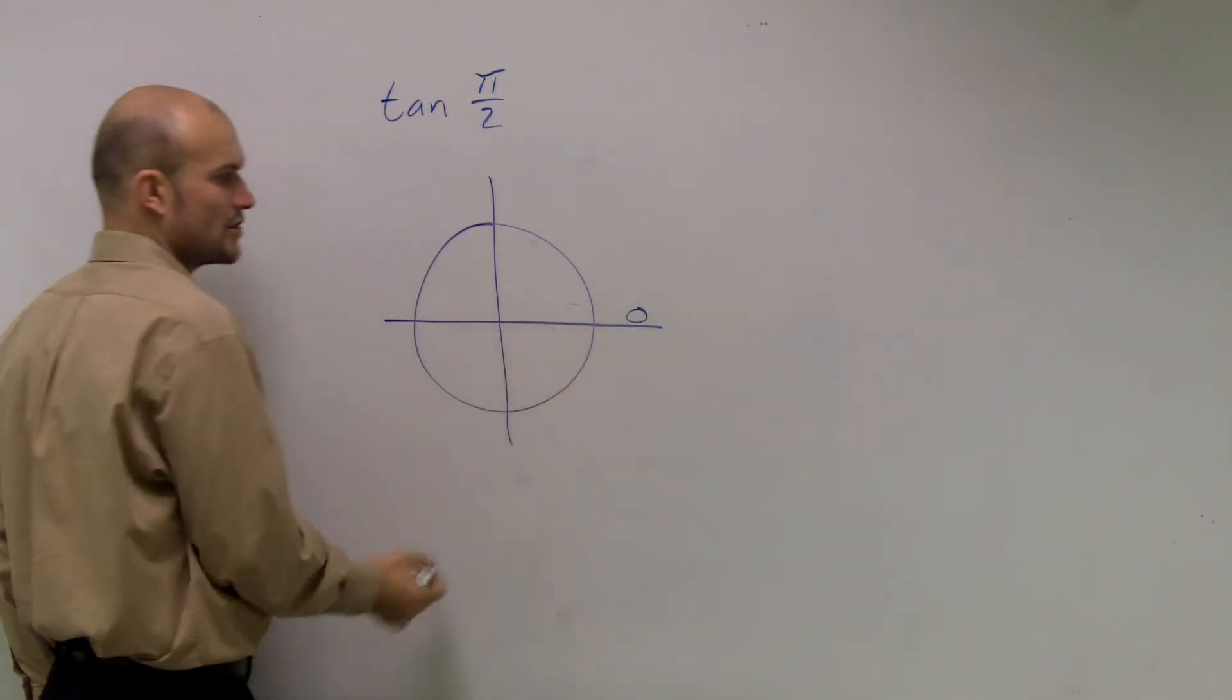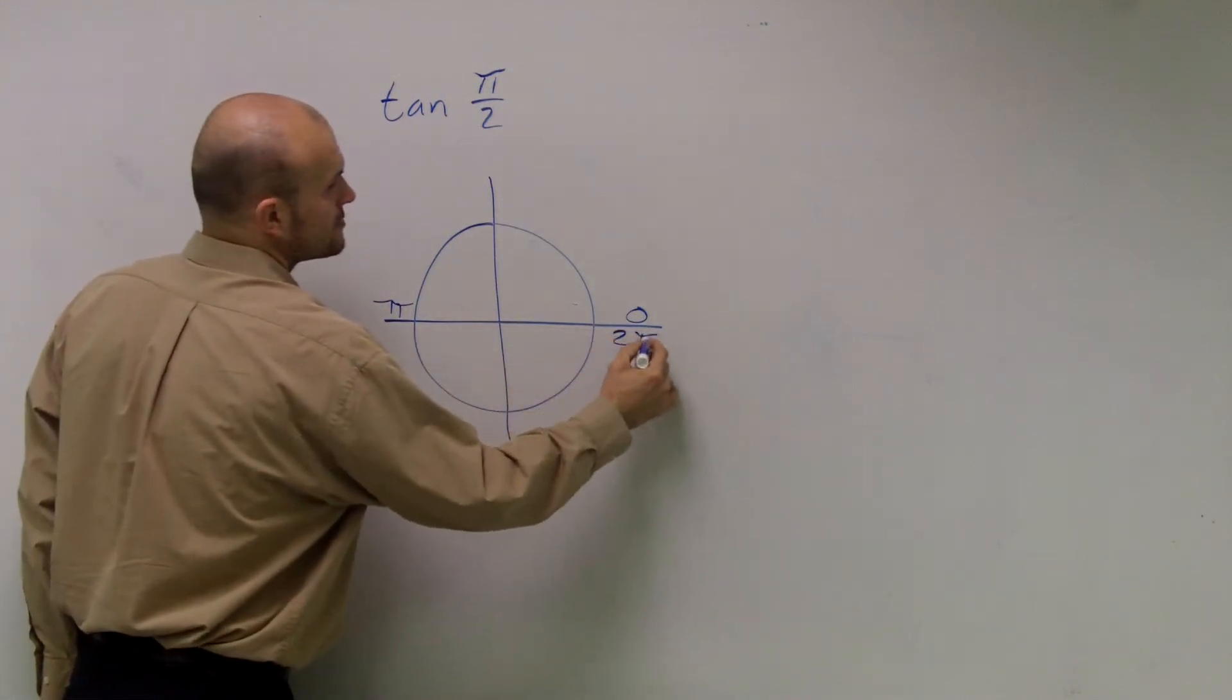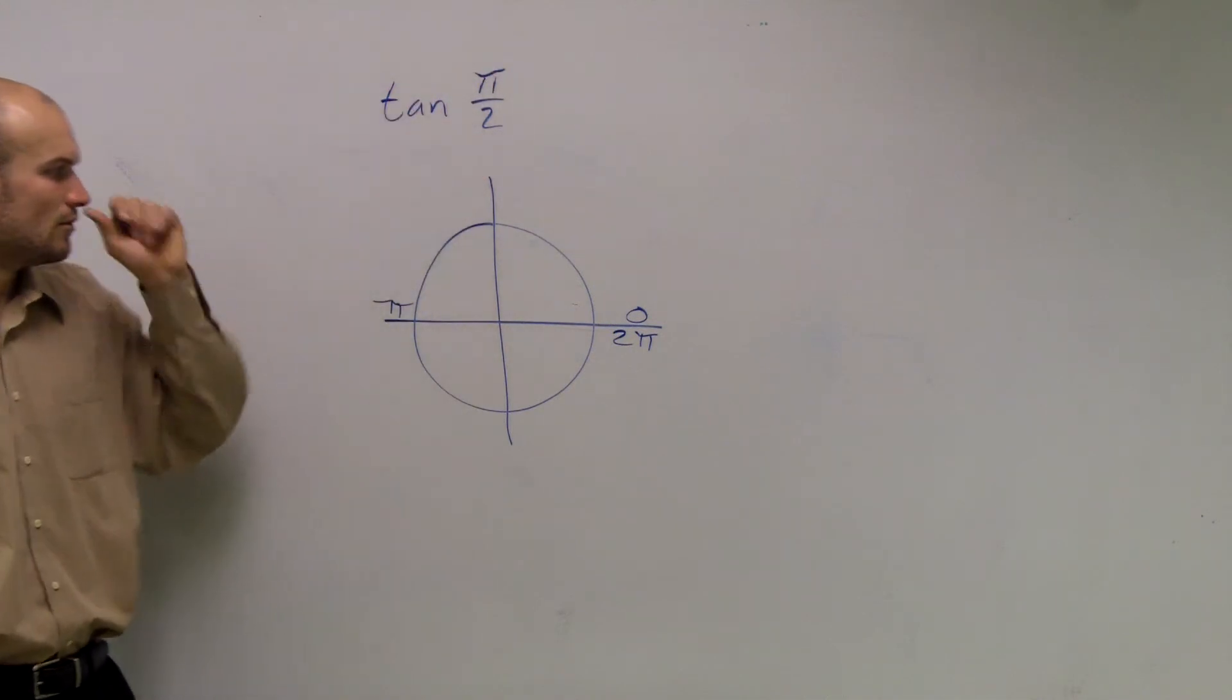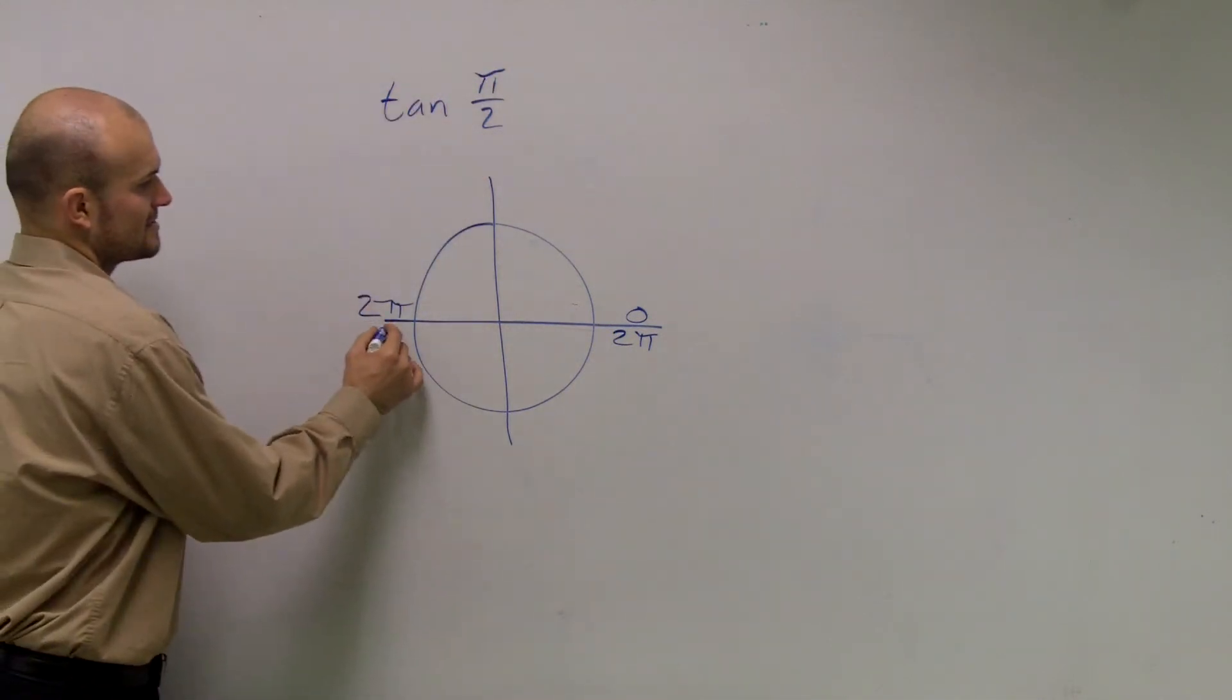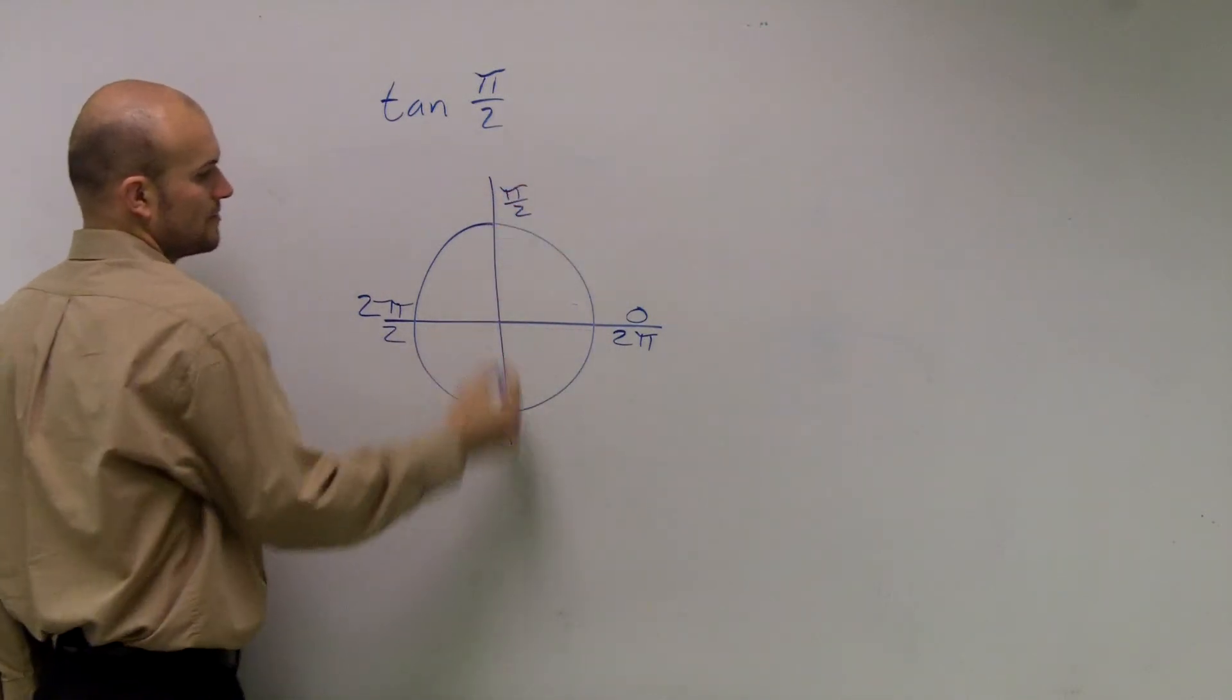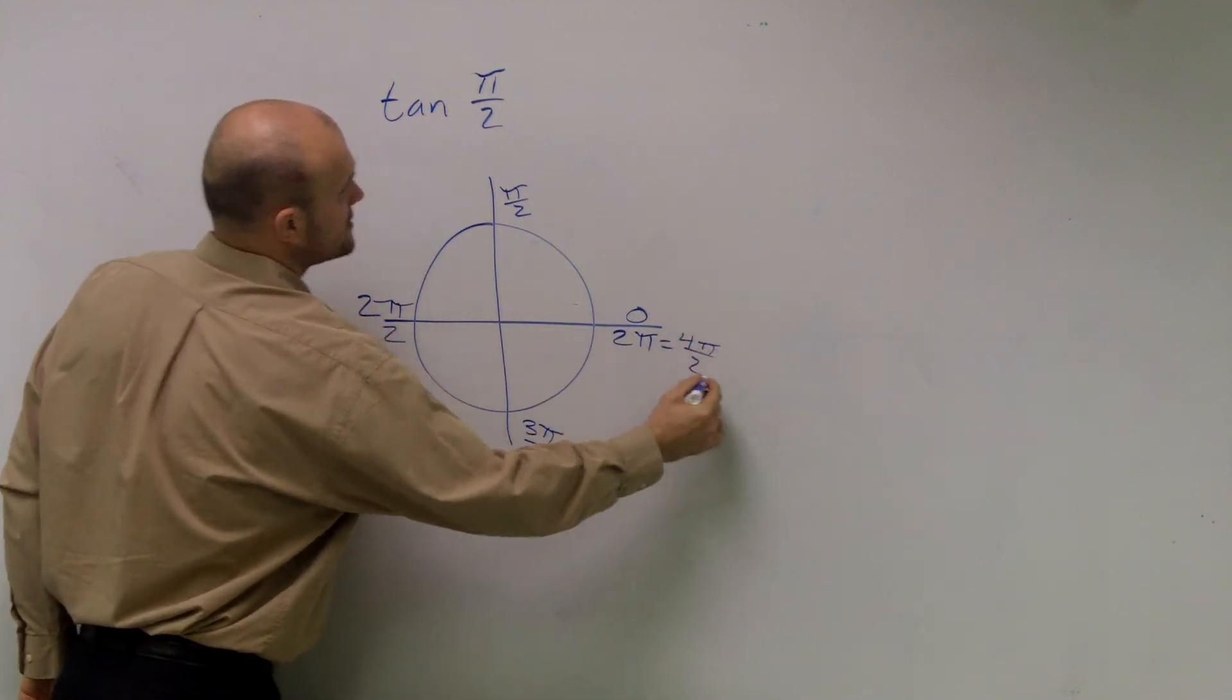Remember, if I had my initial side at 0, here was π, here would have been 2π. So if I want to figure where's this angle when it's π divided by 2? Well, remember, if I want to rewrite this as 2π over 2, this would be π over 2, 3π over 2, and 2π is equal to 4π over 2.